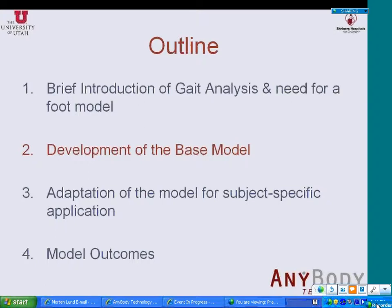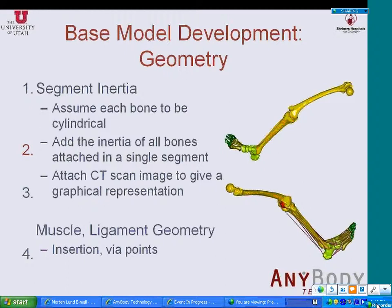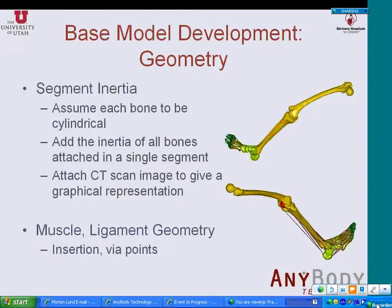Now I am going to start with the steps involved in developing a base model. The first step is defining the segments. To define a segment, we define the coordinate system of each segment and then define the inertial properties. To compute the inertial properties, we assume each bone to be cylindrical, measure the radius in all normal directions, and use those to compute the inertial properties. After doing that, we attach a CT scan image to each segment to give a graphical representation of the model. Once we have all the bones in the model, we include all the muscles and ligaments spanning across the joints.